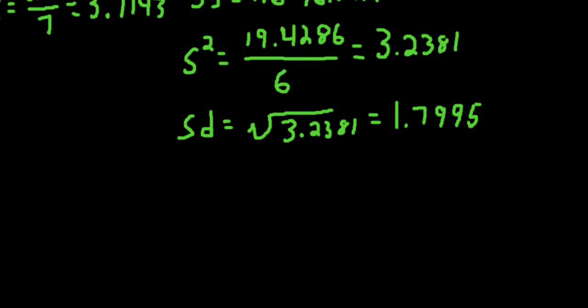And then finally, to get the standard error of the mean, we divide the standard deviation, which is 1.7995, divided by the square root of n, which here is 7. We take 1.7995 divided by the square root of n, and we get 0.6801 as our standard error of the mean.